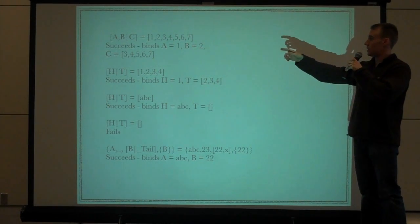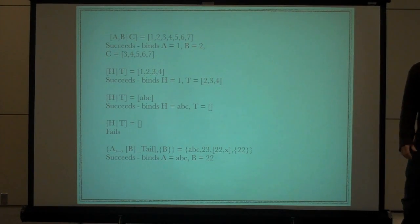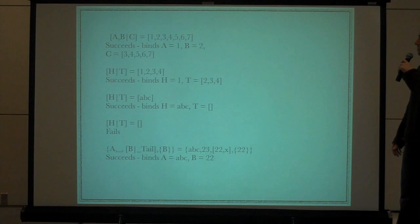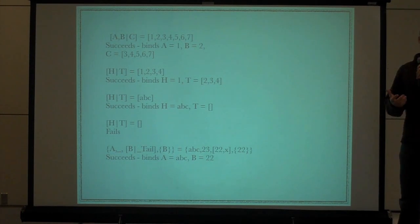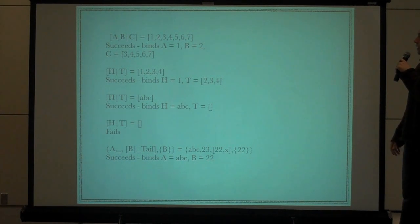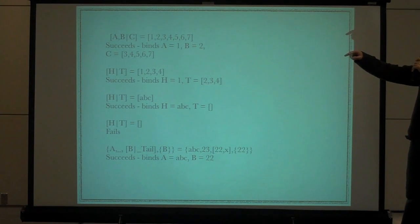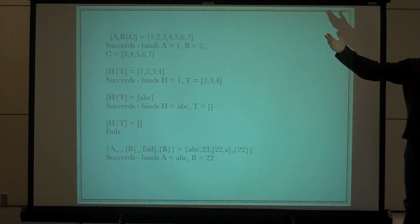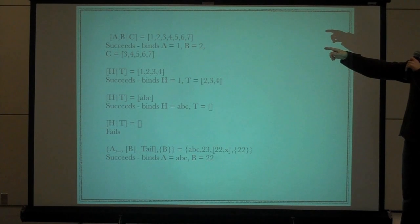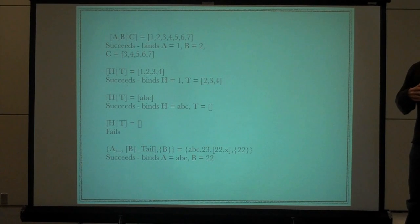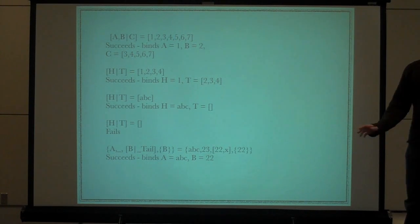So the first example here, A, B, pipe, C. So the pipe, which we covered really briefly previously, what the pipe says is, just think of it as saying rest. It's the rest of the list. So it's the tail. Tail would be probably the more common thing to call it. So A will bind here to 1. B, comma, next element, 2. Pipe, the rest. So B, or C, is going to be 3, 4, 5, 6, 7. That is, pay attention to that one. It's going to be all over the place.